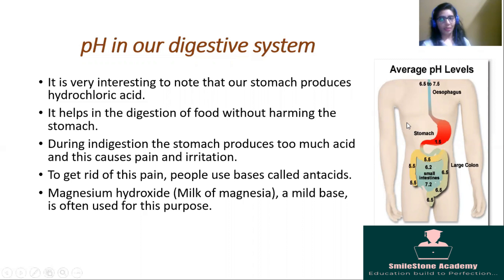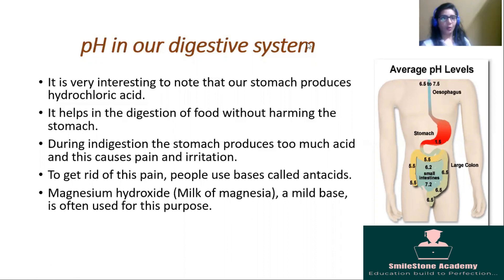Just observe this diagram. In this diagram you can see some digestive organs and their average pH levels. You must remember these: the pH level of the mouth is 6.5 to 7.5; the pH in the stomach is about 1.5; the pH in the small intestine is 6.5 to 7.5; and the pH level of the large intestine is 5.5 to 6.5.